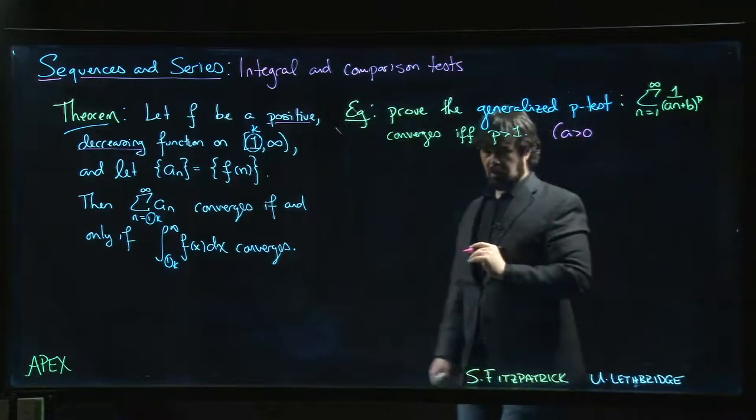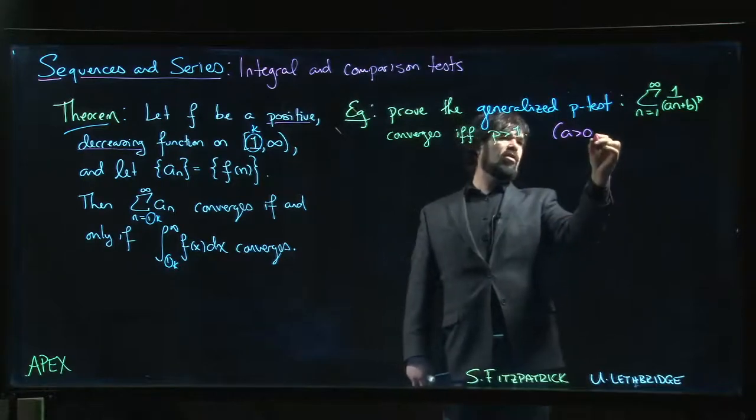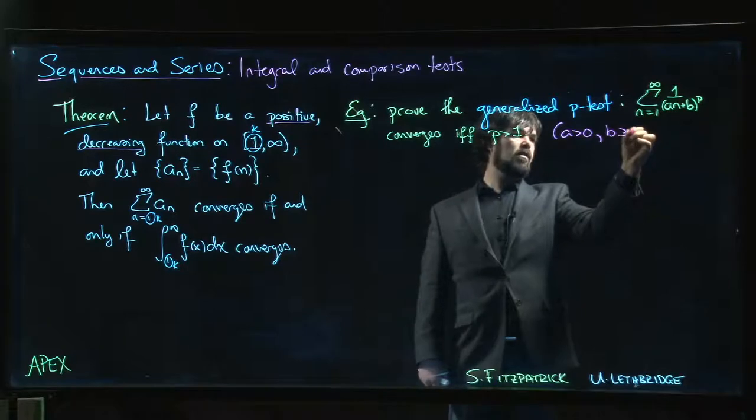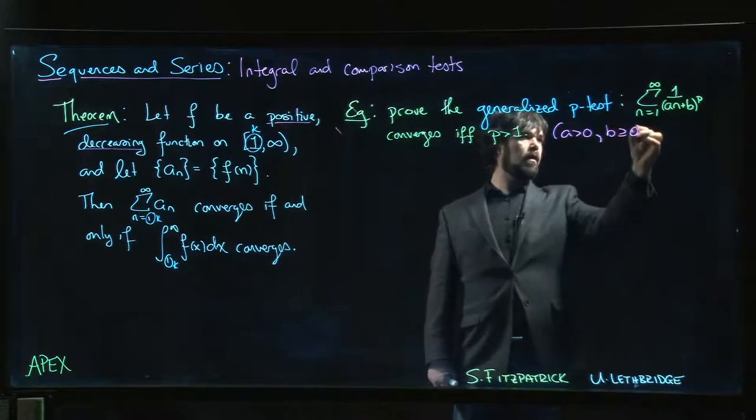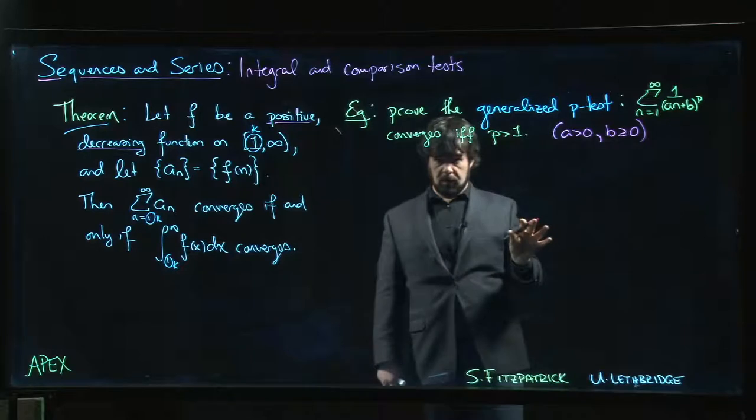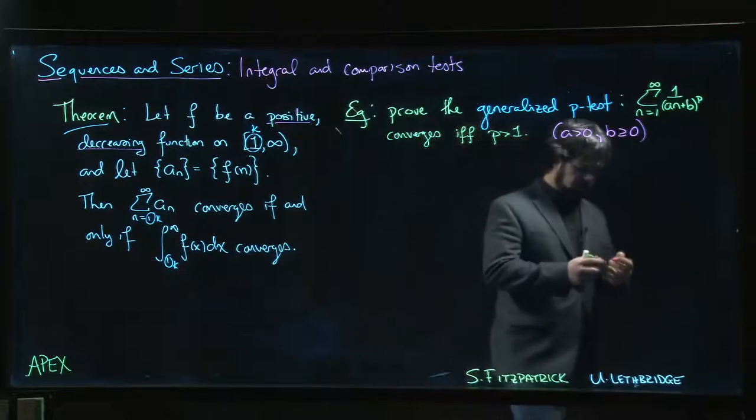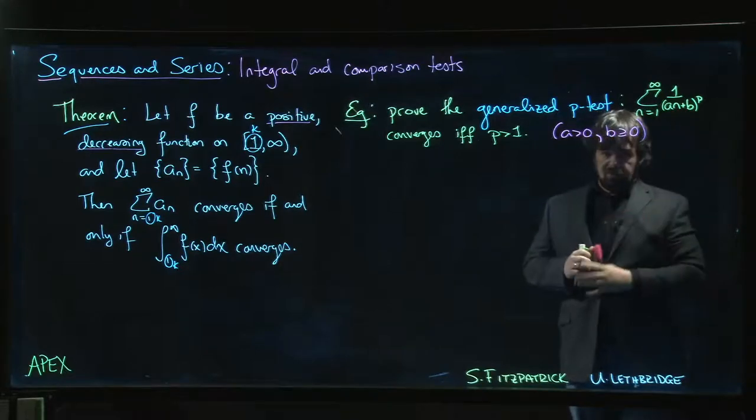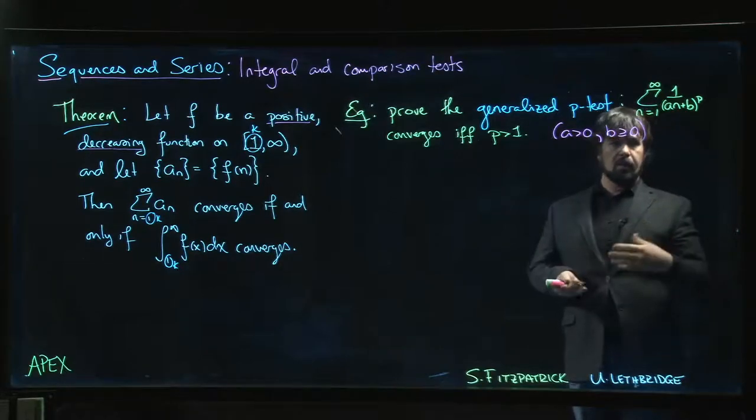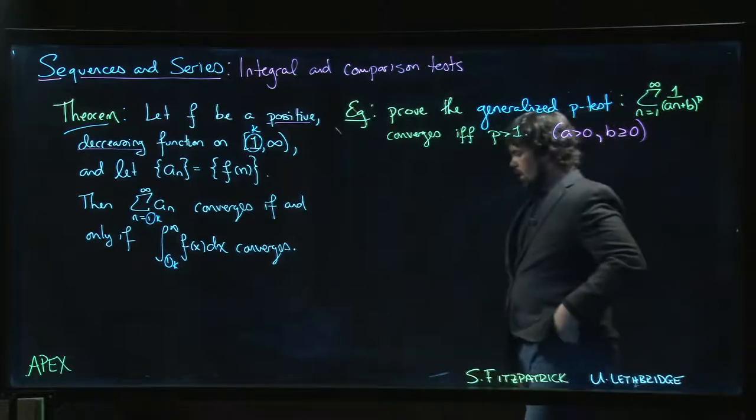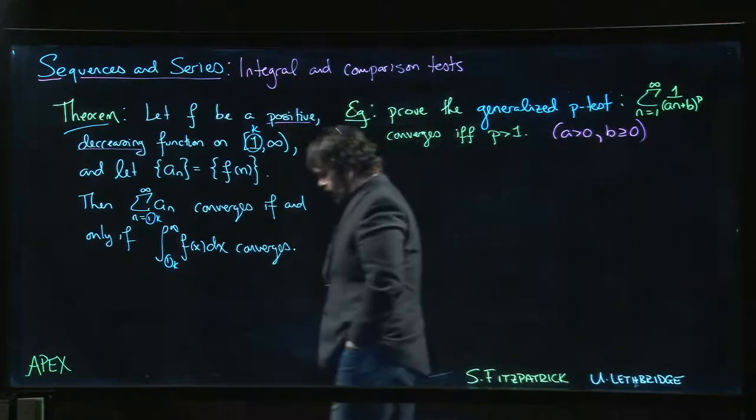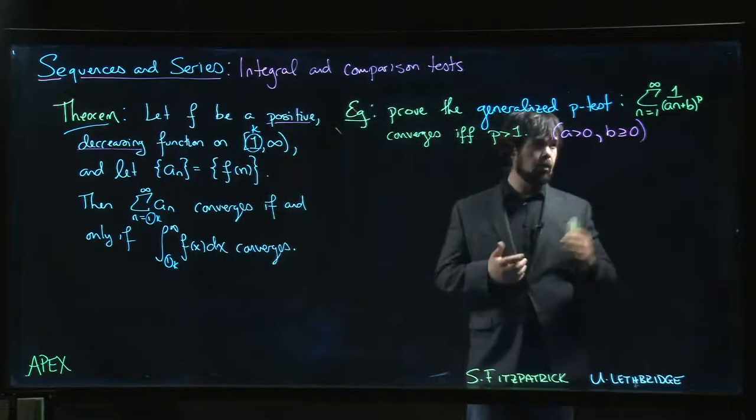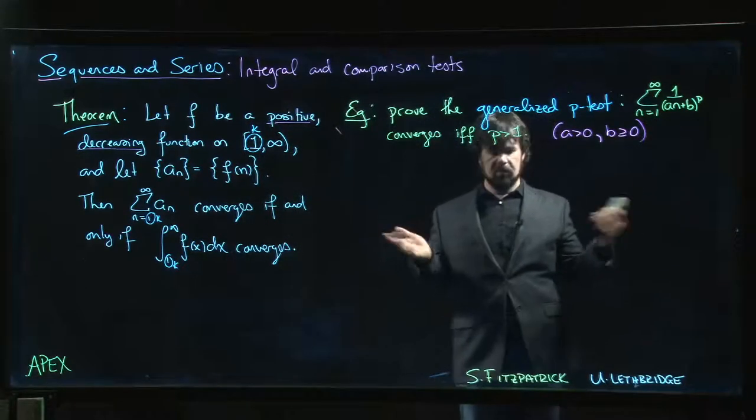And also, to simplify things for us, let's assume that b is bigger than or equal to zero. We'll assume that as well, because if b is negative, then we introduce the possibility that there might be a zero in the denominator for some value of n. Even if that zero doesn't occur at an integer, even if it occurs at some rational or real number value, it would still be the case that there's a vertical asymptote somewhere.